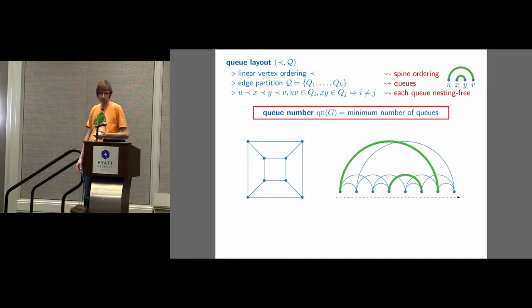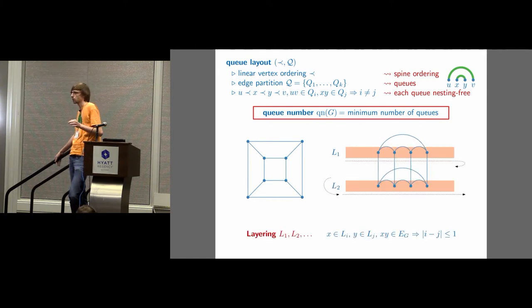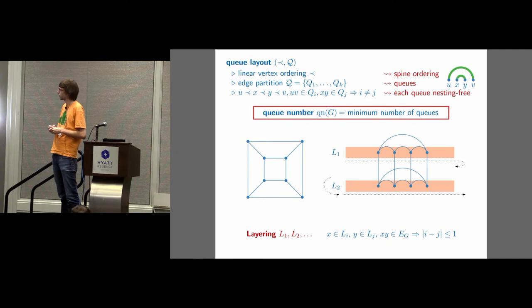But of course, maybe I get a better vertex ordering. So let's try an approach that is proved to be very useful in Q numbers, namely vertex orderings that are very special, which are layerings. So a layering is partitioning the vertices of the graph into layers L1, L2, and so on. The condition is that edges are only within a layer or between consecutive layers. You can think of BFS layerings as the most prominent examples.